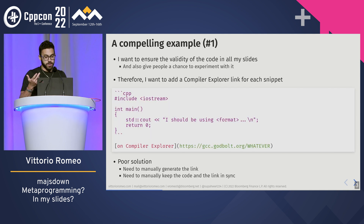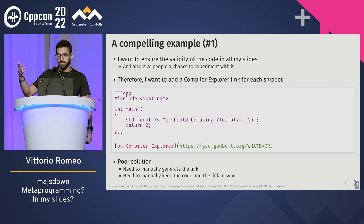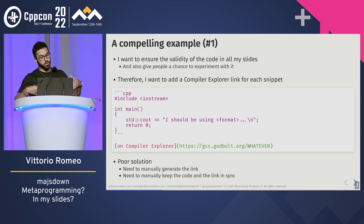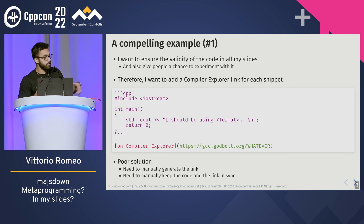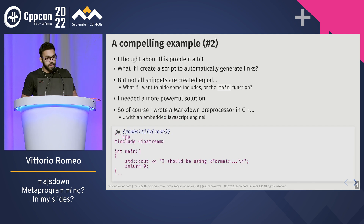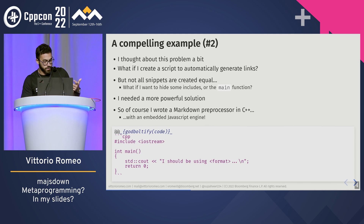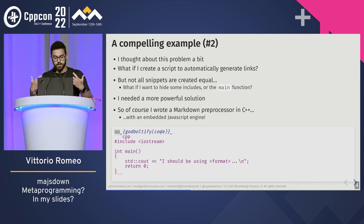Here's how it works. For example, let's say I have this code snippet over here. In the past, before I made this thing, I would write the code snippet in Markdown, then go on Compiler Explorer, copy-paste it, get the link, put it in the slide, and manually have to keep it in sync. With this thing, I can now annotate this code block and pass a function called GotBaltify, giving the code to this function, and it will end up generating a link for me that stays in sync.